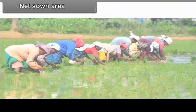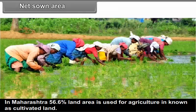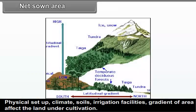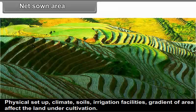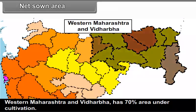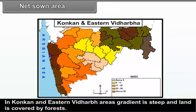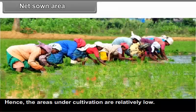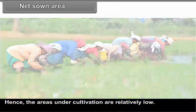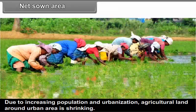Net sown area: In Maharashtra, 56.6% of land area used for agriculture is known as cultivated land. Physical setup, climate, soils, irrigation facilities and gradient of area affect the land under cultivation. Western Maharashtra and Vidarbha have 70% area under cultivation. In Konkan and eastern Vidarbha, the gradient is steep and land is covered by forests, hence the areas under cultivation are relatively low. Due to increasing population and urbanization, agricultural land around urban areas is shrinking.